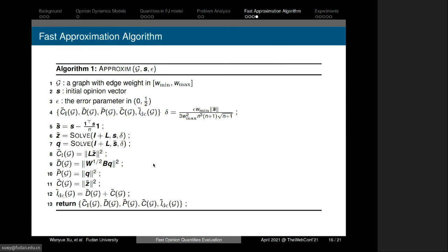This is the pseudocode of our approximation algorithm named ApproxQuant. It can return the approximate values of internal conflict, disagreement, polarization, controversy, and disagreement-controversy index.